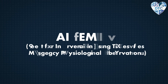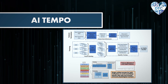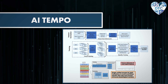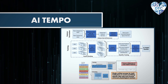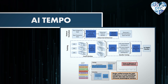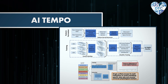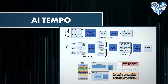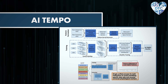Team AI Tempo — Alert for Intervention using Time-series Emergency Physiological Observations — uses machine learning to predict LSIs by fusing incomplete medical data from multiple sources. It utilizes a combination of raw, expert, derived, and data-driven features.